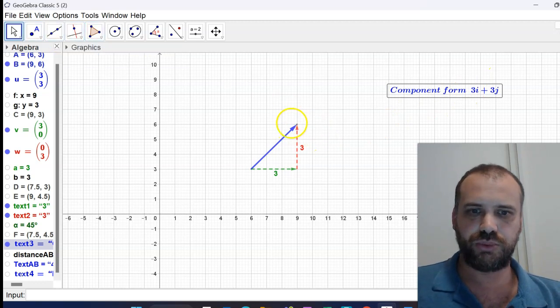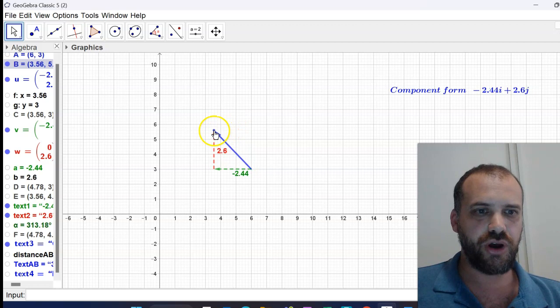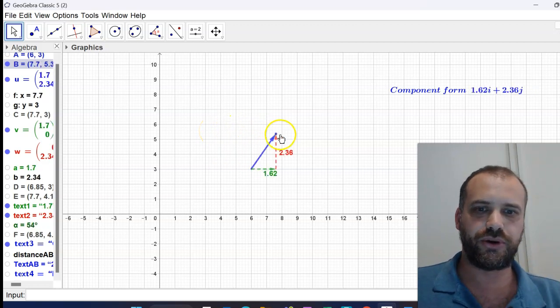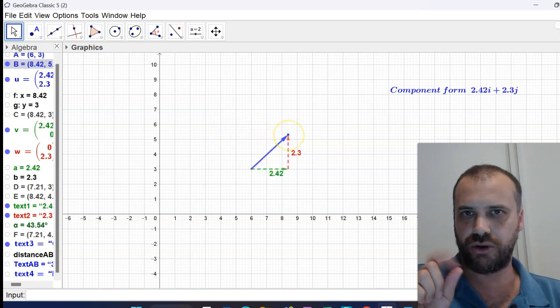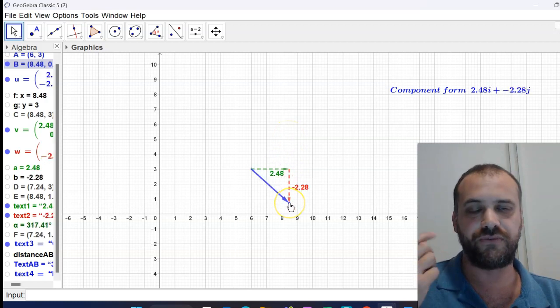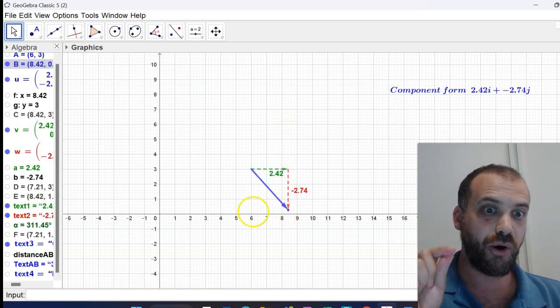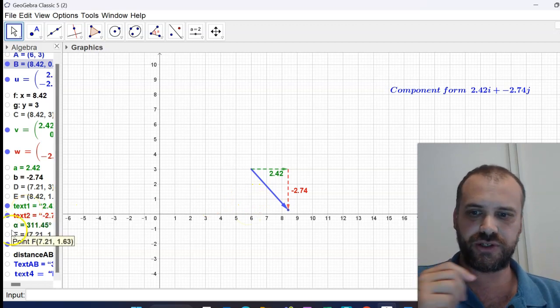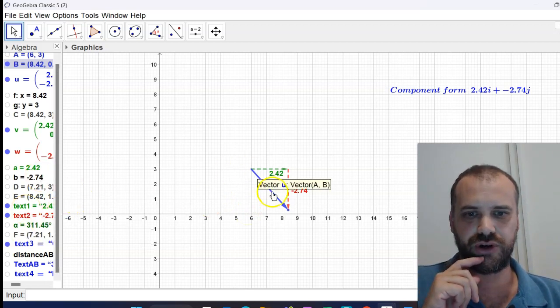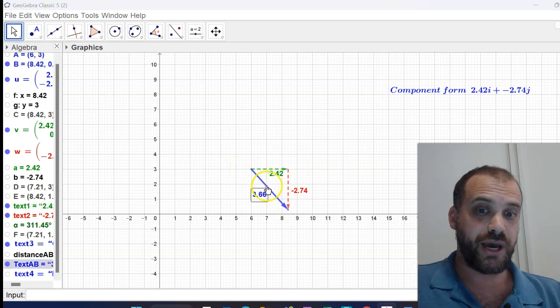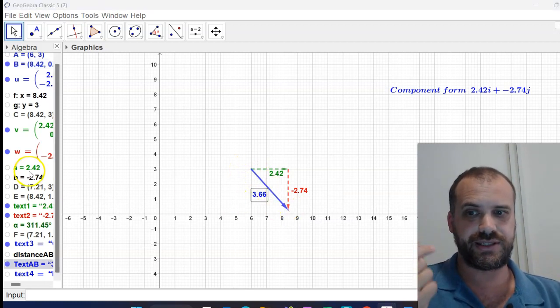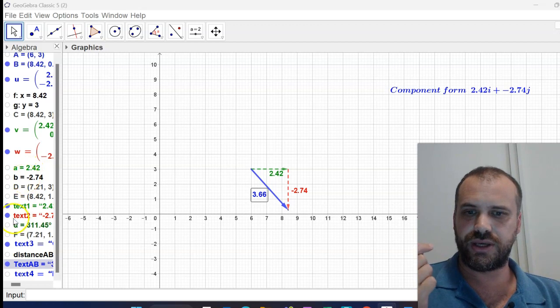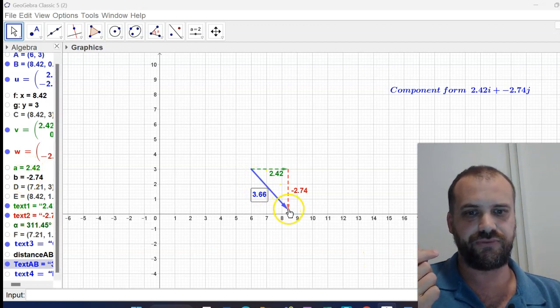Now it doesn't matter which way we move this vector, we can describe it using the i and the j component. But there is another way of describing a vector as well and that's in polar form. Polar form is very straightforward, you just need to find the magnitude of the vector, right now has a magnitude of 3.66 and the other thing that you need is the angle of the vector.